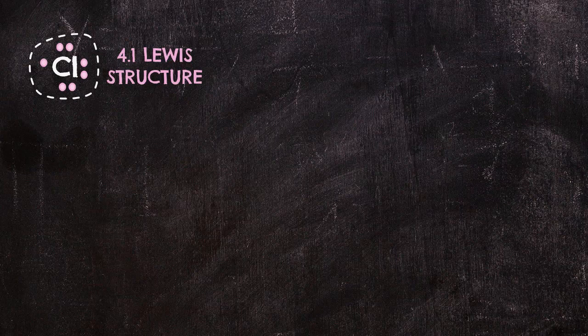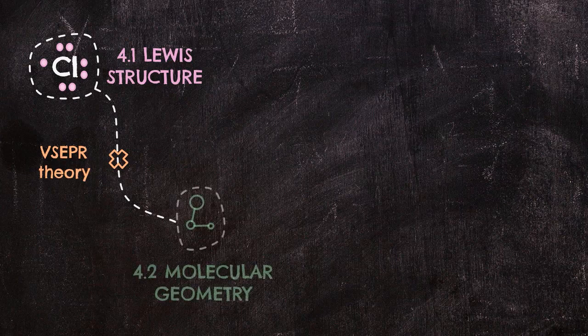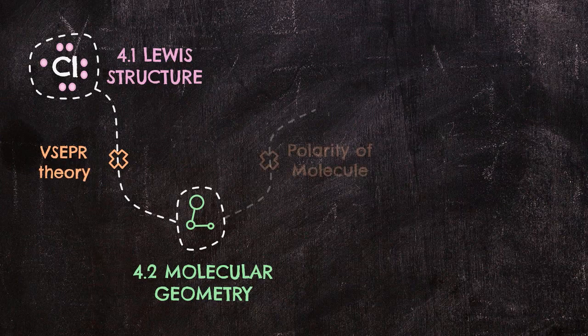We have already learned this in high school. The Lewis structure only gives you the two-dimensional representations of a molecule. To see this structure in three dimensions, you are going to apply the VSEPR theory. VSEPR stands for valence shell electron pair repulsion, to finally know the geometry of a molecule. So you will learn molecular geometry in subtopic number two. And then from the 3D structure, you get to know the polarity of a molecule — either polar or non-polar.